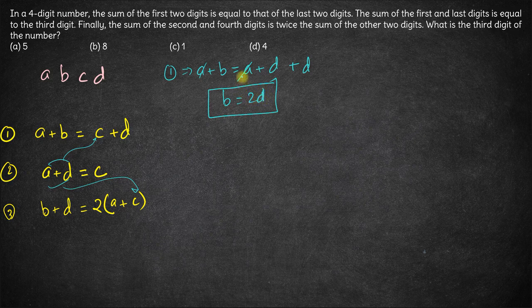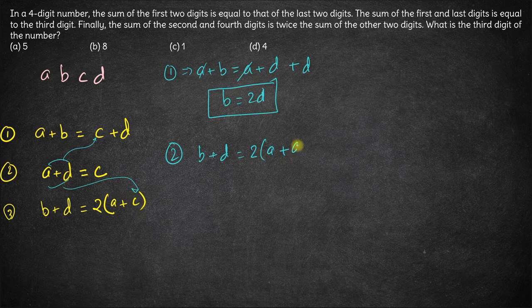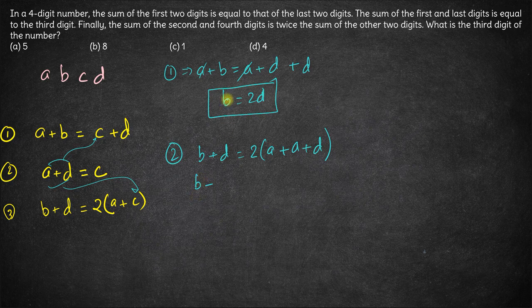B is equal to twice of D, and now putting C equals A plus D in the third equation we have B plus D is equal to twice of A plus, instead of C we put A plus D. So we get B plus, and instead of B we can write 2D over here.